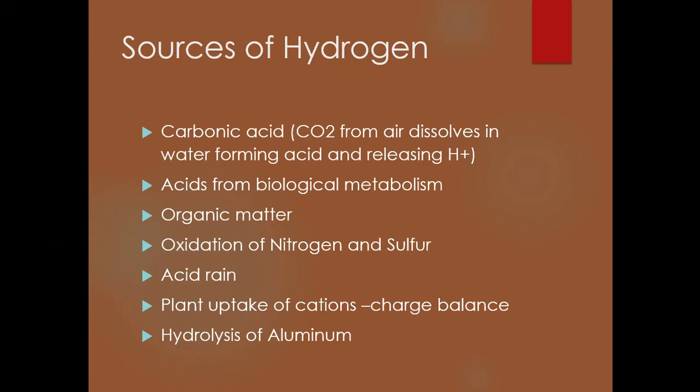Sources of hydrogen include carbonic acid from the air, atmospheric deposition, acids from biological metabolism, organic matter, oxidation of certain elements, and acid rain. Plants can also uptake cations, causing a charge imbalance in the soil. Additionally, the hydrolysis of aluminum becomes important at lower soil pHs.